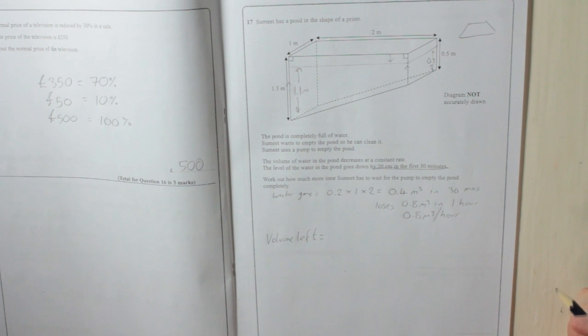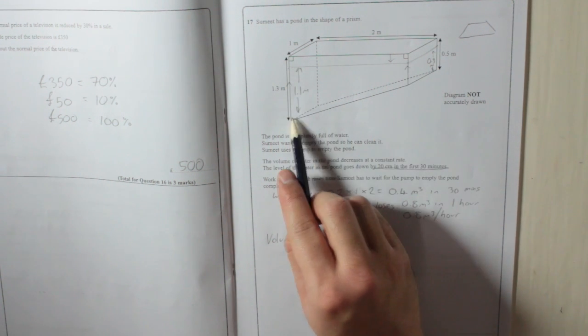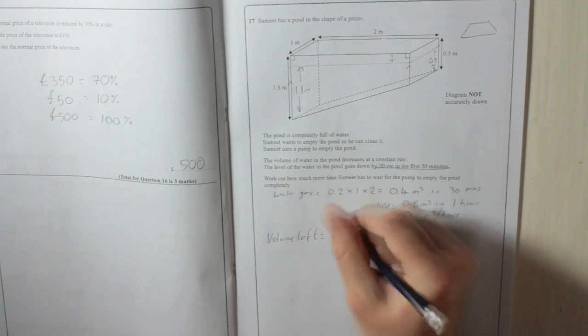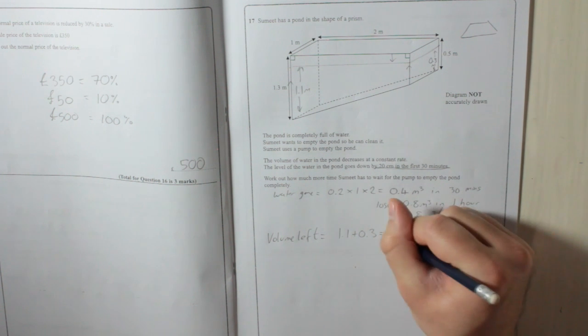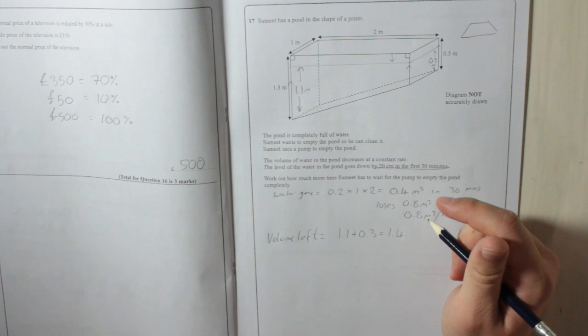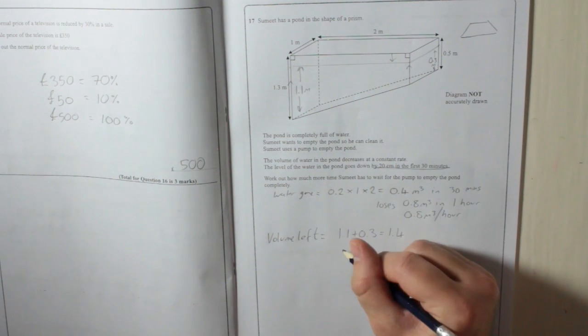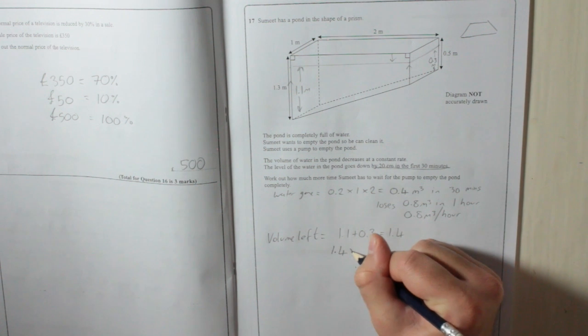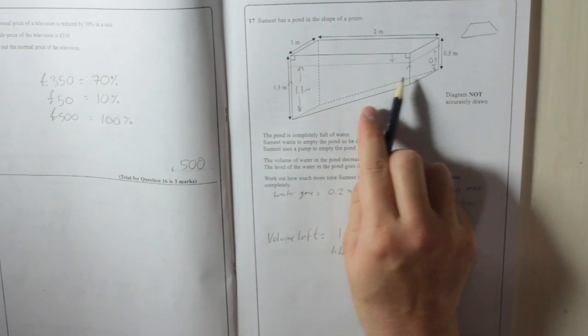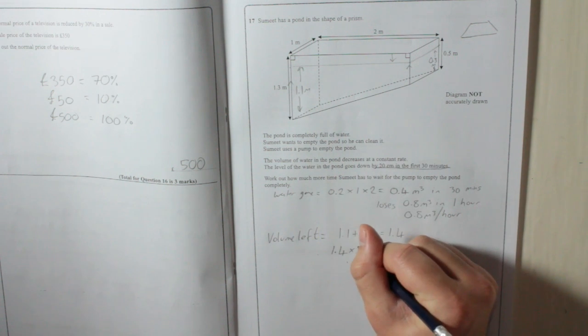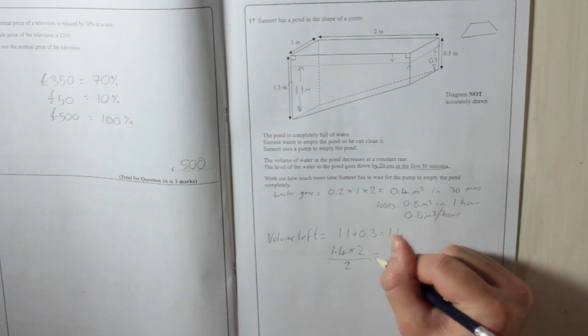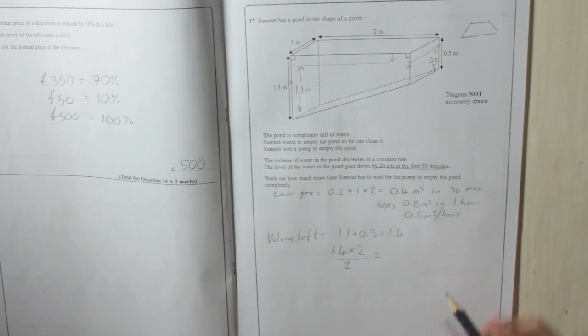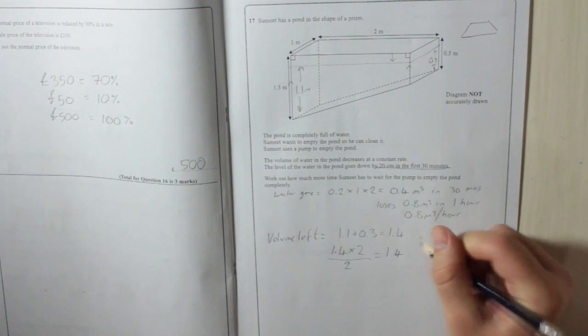Remember, the cross section is a trapezium, so we're going to add together the two parallel sides. 1.1 plus 0.3 is 1.4. Then we're going to multiply it by the distance between the two parallel sides, that's 2. And then you've got to halve it, so divide by 2. Which is nice, because 1.4 times 2 divided by 2 is just going to be 1.4 meters cubed left.